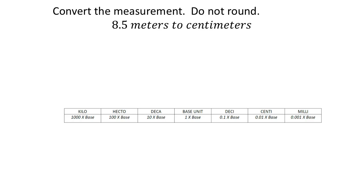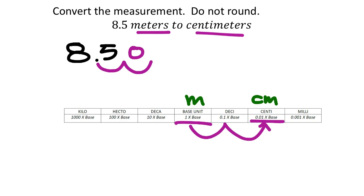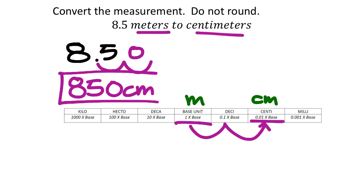For 8.5 meters converting to centimeters: meters is the base unit, and centimeters (cm) is two places to the right on the chart. So starting from meters and going to centimeters is two boxes to the right. I move the decimal two spots to the right, making that 850 centimeters.